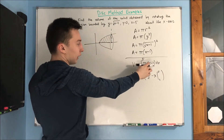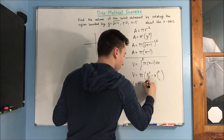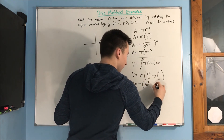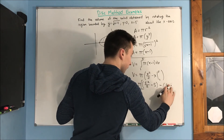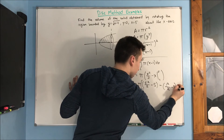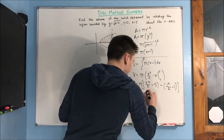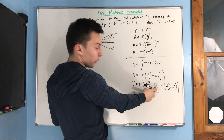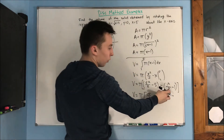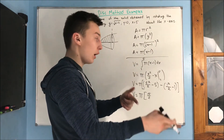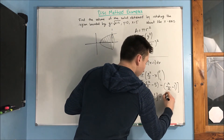Volume equals pi times: at x equals 5 we get 25 over 2 minus 5, which is 15 over 2. At x equals 1 we get 1 half minus 1, which is negative 1 half. Subtracting gives 15 over 2 plus 1 half, and altogether the volume is 8 pi.